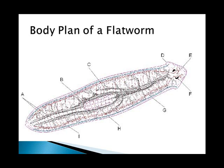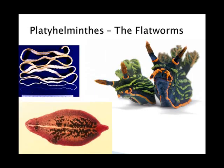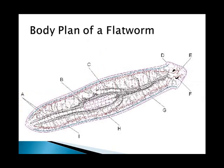Looking at a generalized picture of a turbellarian, a free-living flatworm or planarian, there are a few things to note. The pharynx is labeled H — that's the part that extends out of the body and sucks in food. The digestive organs are labeled C, and on the fluke picture you can see them as those dark, granular-looking things across the middle of the body. They have basic eyes labeled F, a basic brain labeled E, and basic ears called auricles labeled D. They're kind of cute.